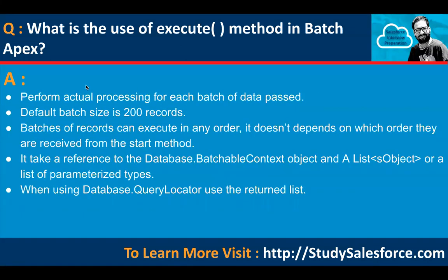What is the use of the execute method in Batch Apex? It performs the actual processing for each batch of data. The default batch size is 200 records, but you can adjust that. Batches of records can execute in any order — it doesn't depend on the order they are received from the start method. It takes a reference to the Database.BatchableContext object and a list of sObjects or a list of parameterized types. When using Database.QueryLocator, use the returned list.